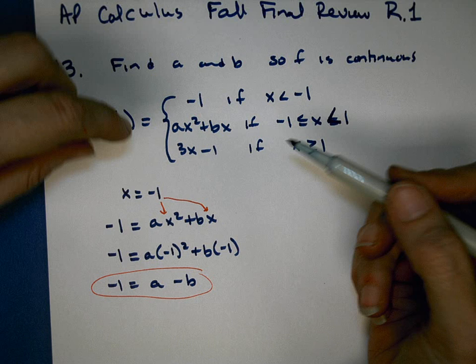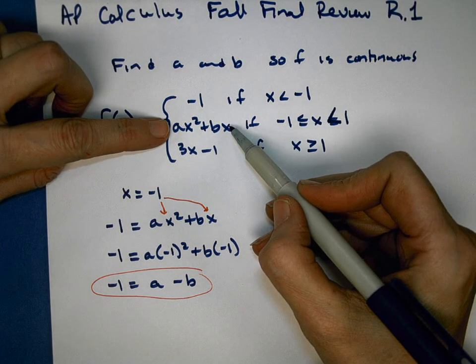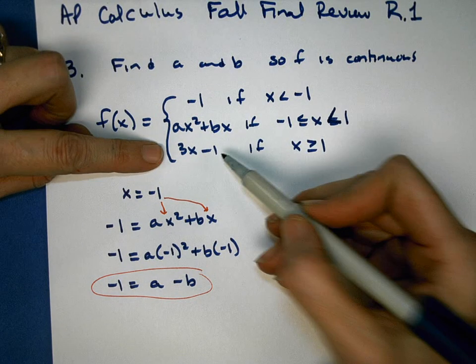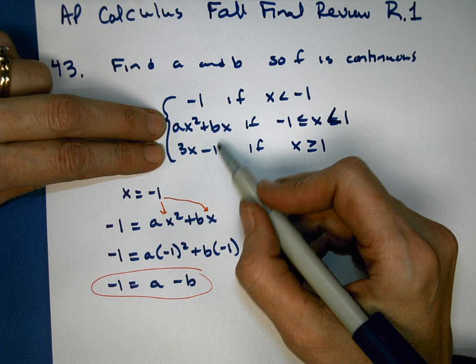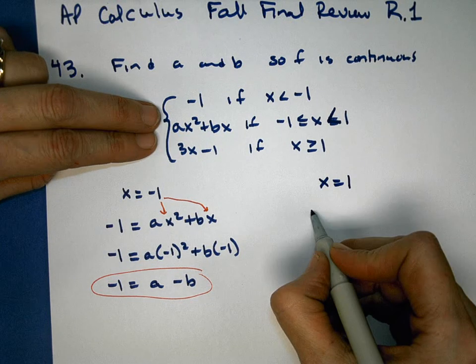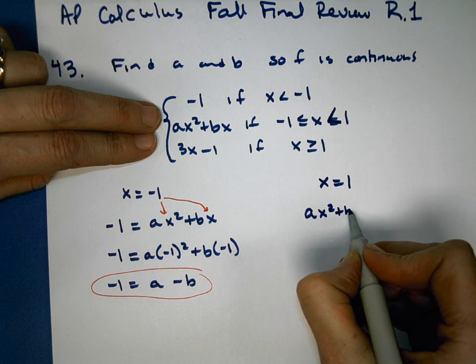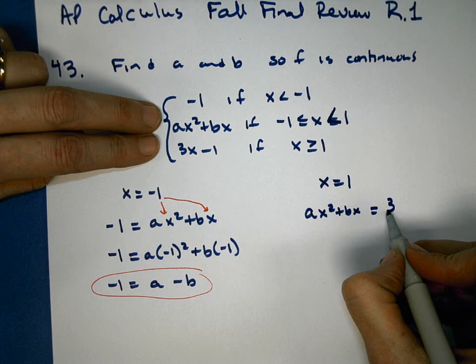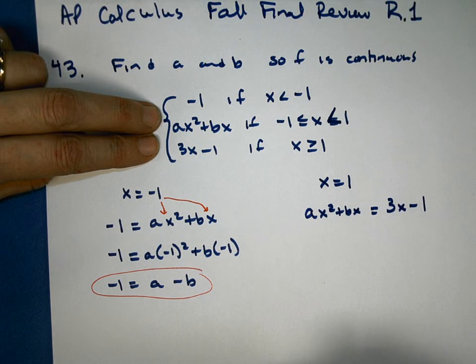There's another place we want for them to connect, and that is between the middle function and the lower function. We want those to be equal, and they meet at the X value of 1. So when X is 1, we want this middle equation to equal the lower equation.